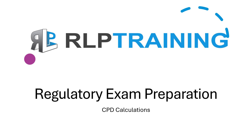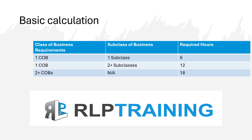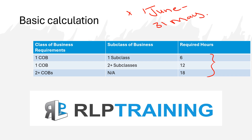When do we have to have special calculations? We'll start with the basic calculation. We know from previous studies that we will always either need 6, 12, or 18 hours of CPD every year. The cycle runs from the 1st of June to the 31st of May every year — that's our CPD cycle. So in the cycle, we would either be required to obtain 6, 12, or 18 hours of continuous professional development hours.